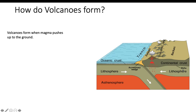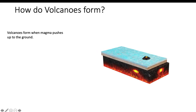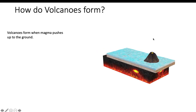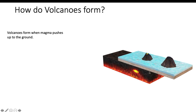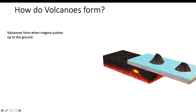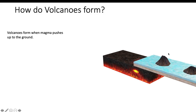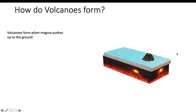The last way I want to talk about is a hot spot. An oceanic plate is moving, and magma is rising to the top and forming a volcano. Then the plate moves and the same thing happens again — magma rises to the top and forms another volcano.